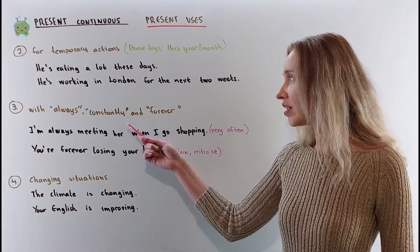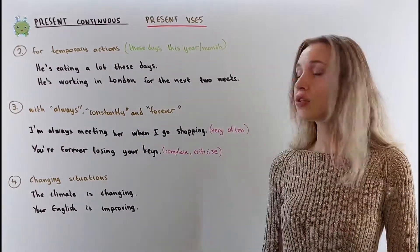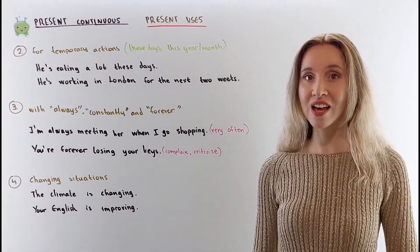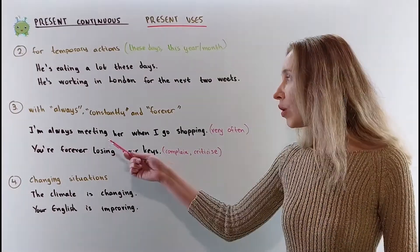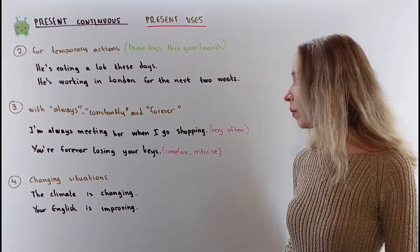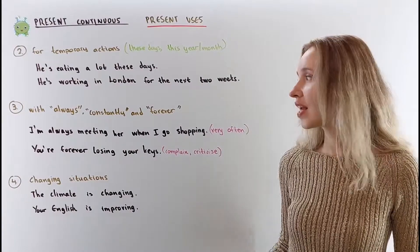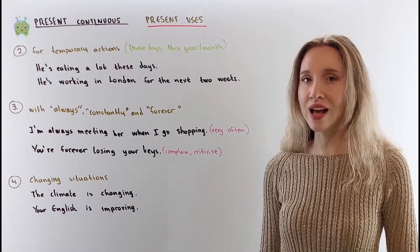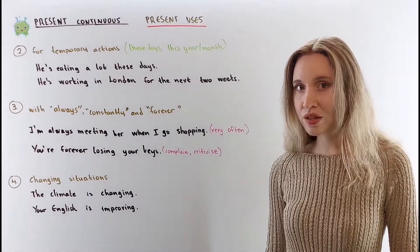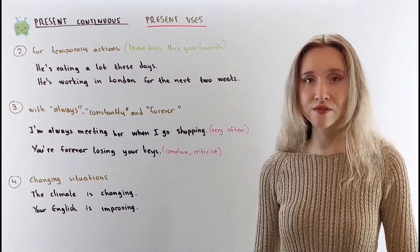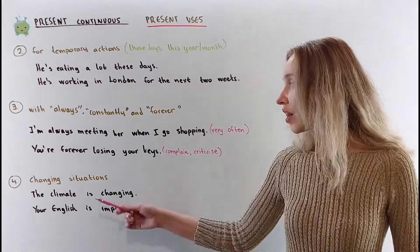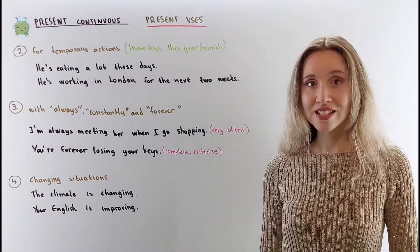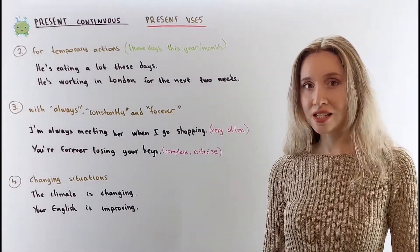Use the present continuous with always, constantly, and forever to criticize, complain, or to say that something happens very often. For example: I'm always meeting her when I go shopping — this happens very often. You're forever losing your keys — I complain or I criticize. Use the present continuous for changing, developing, or growing situations: the climate is changing, your English is improving.